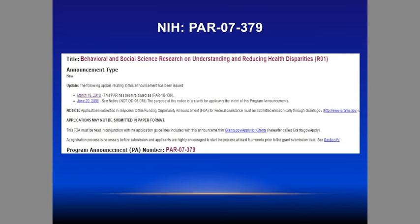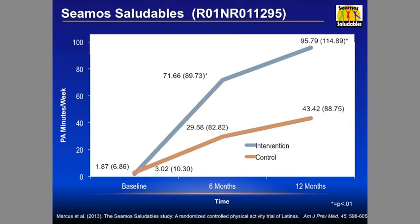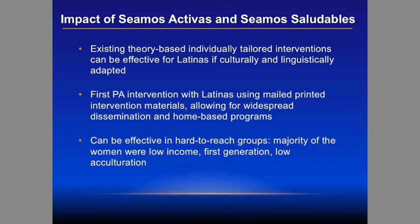We applied for additional funds and did a second, larger randomized control trial. We were able to show nice change and pretty good maintenance. These people started very inactive — most were doing zero minutes per week. We only got about 20 to 25 percent to the national guidelines of 150 minutes, but we showed very large increases in physical activity that were maintained. Taken together, those studies show we can take a theory-based program, adapt it culturally and linguistically, and the print-based intervention can work and could be disseminated.